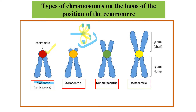In acrocentric chromosomes, the centromere is present towards the end of one particular side. In submetacentric chromosomes, the centromere is near the center but not exactly at the center.